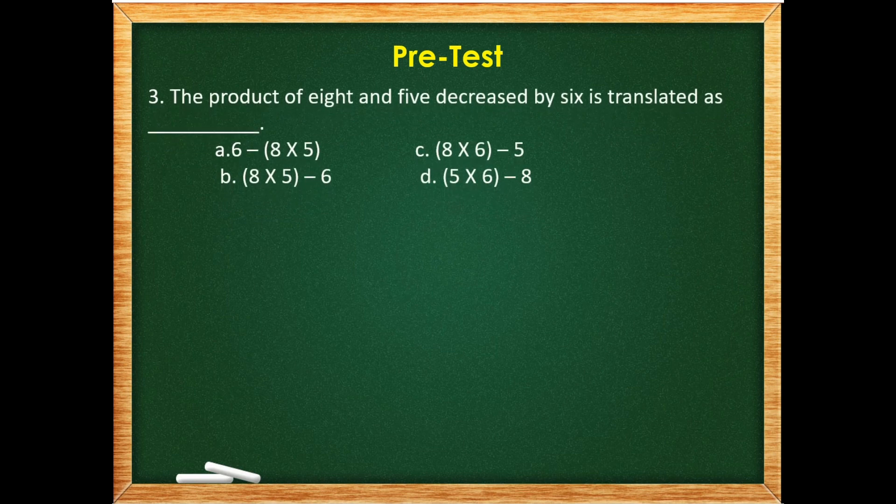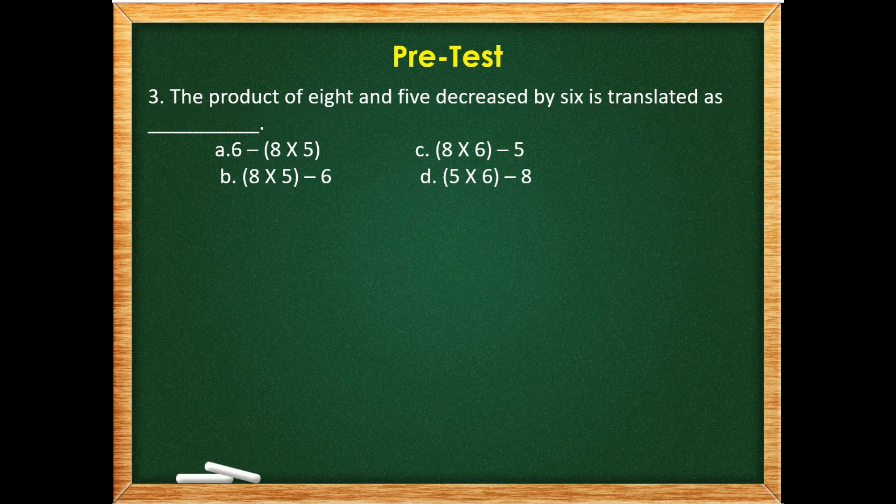Number 3. The product of 8 and 5 decreased by 6 is translated as: A. 6 minus quantity 8 times 5, B. Quantity 8 times 5 minus 6, C. Quantity 8 times 6 minus 5, or D. Quantity 5 times 6 minus 8.